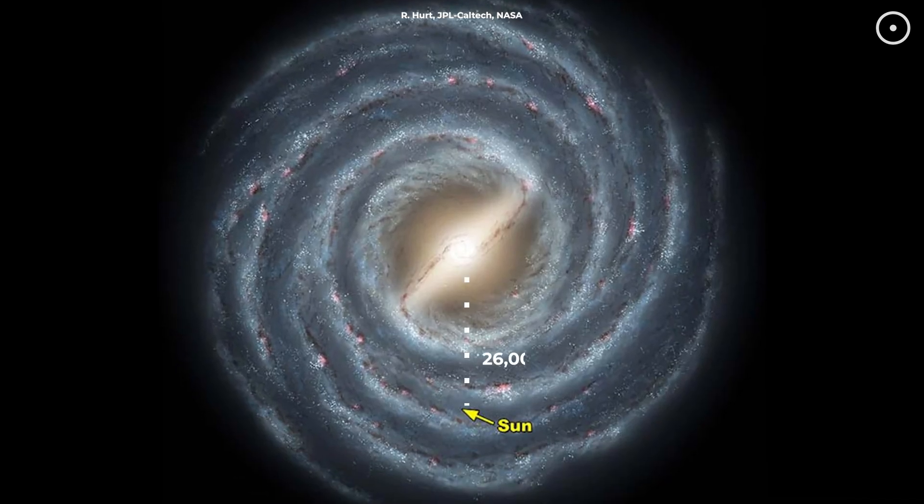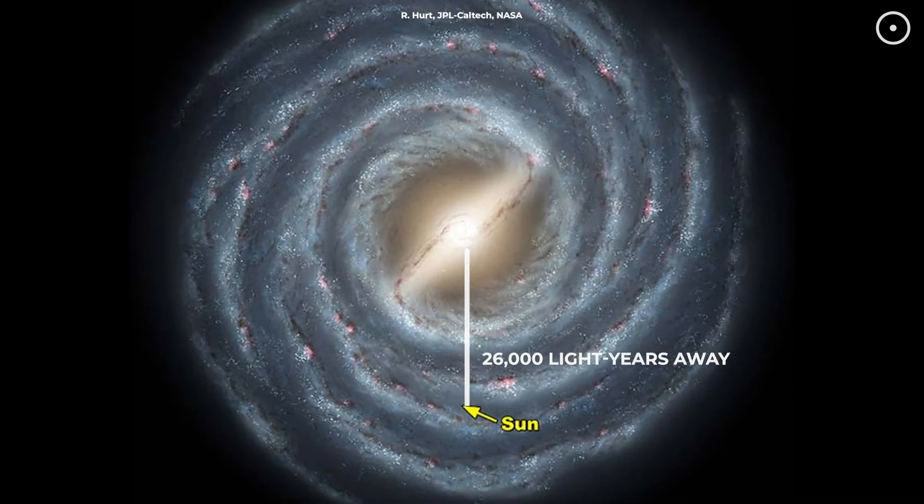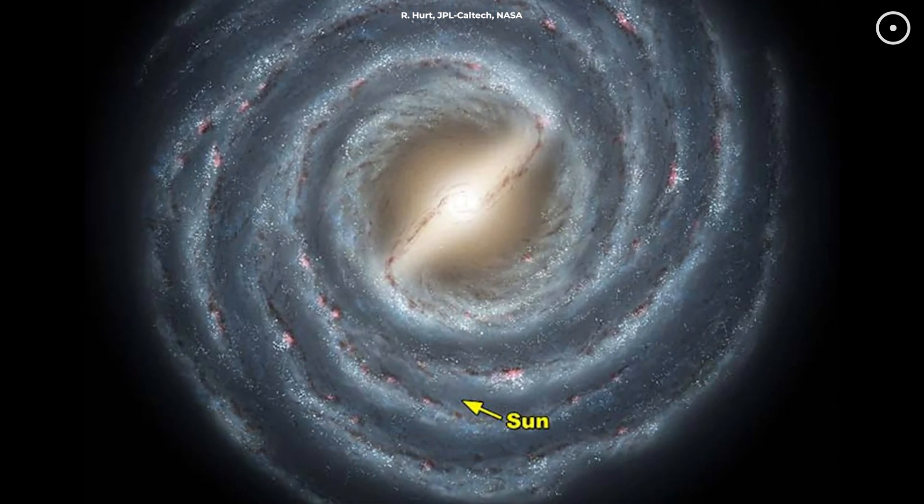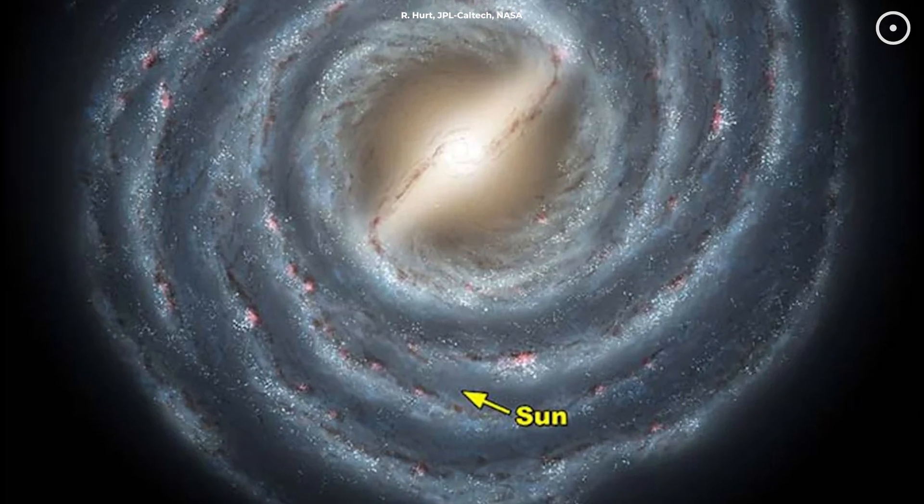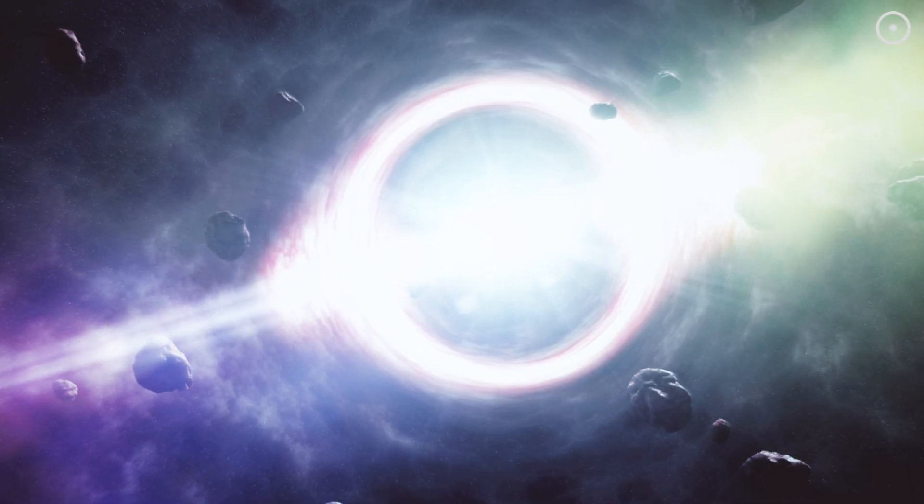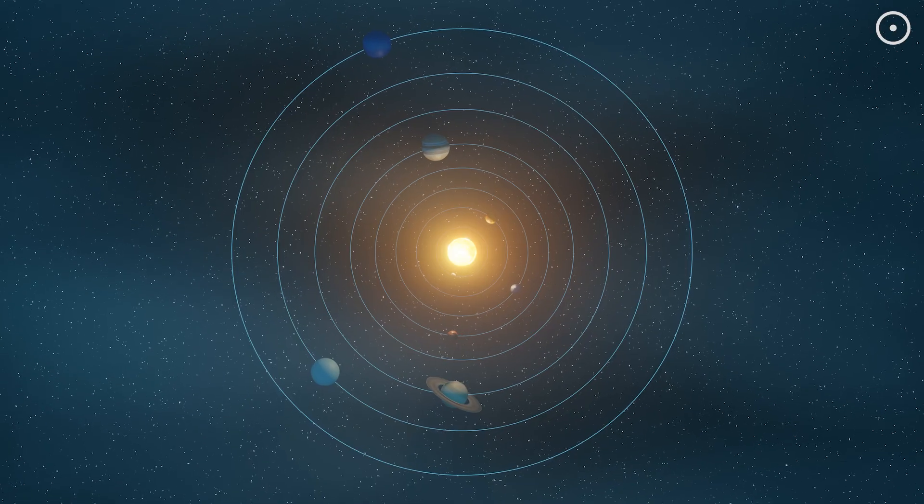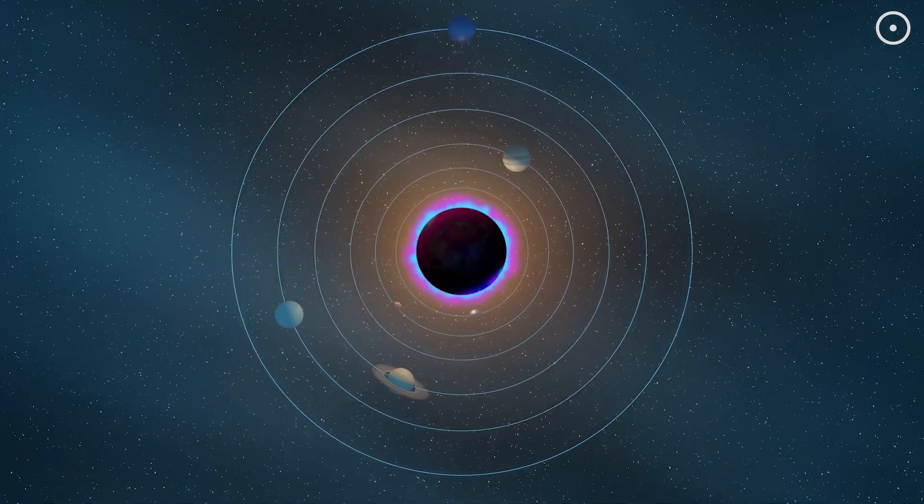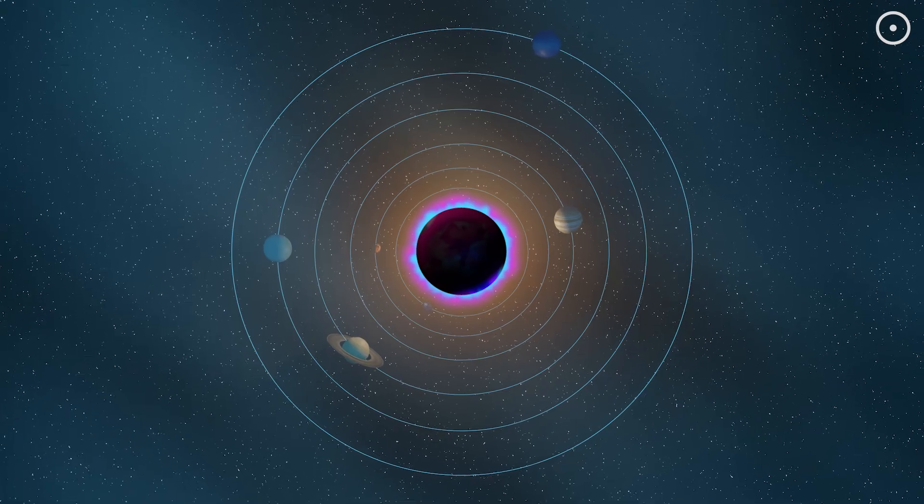Right now, we're sitting about 26,000 light years away from our galaxy center. That's roughly 153 quadrillion miles. At this almost unfathomable distance, there's a black hole so massive that if we replaced our sun with it, it would stretch all the way out to Mercury's orbit.